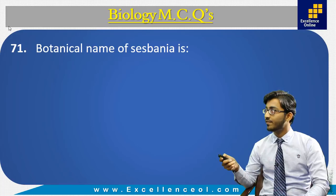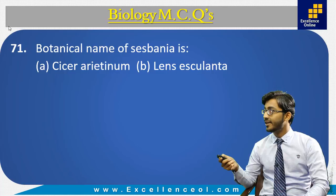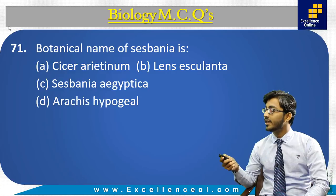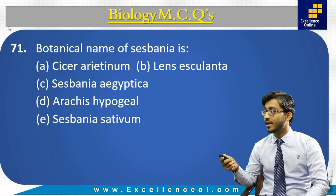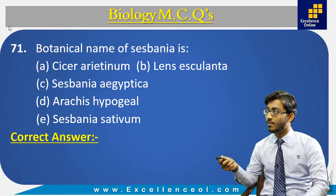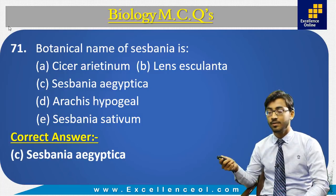Botanical name of Sesbania is. Options: A. Caesar Aritinum, B. Lens Esculenta, C. Sesbania Egyptica, D. Arachis Ipogeal, and E. Sesbania Cetivum. The Sesbania plant belongs to family Phibesis, and the correct answer is C. Sesbania Egyptica.